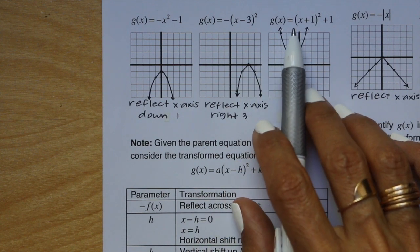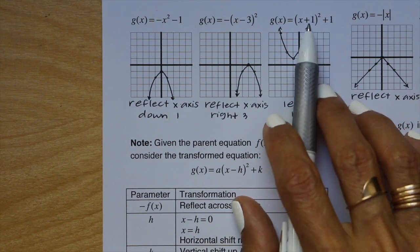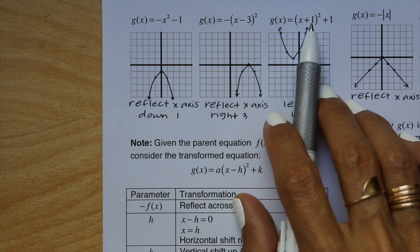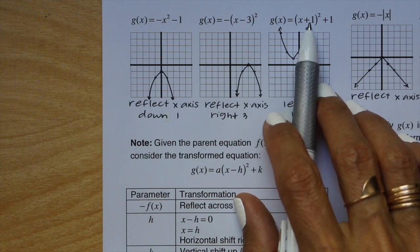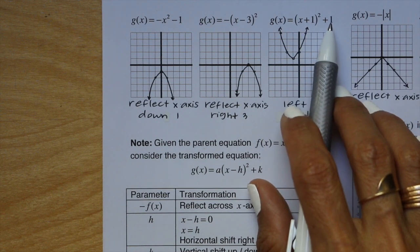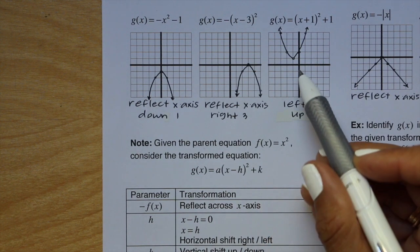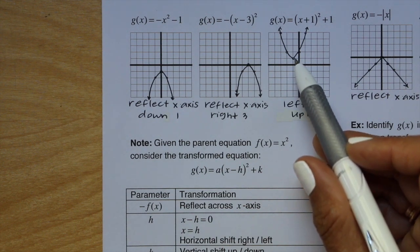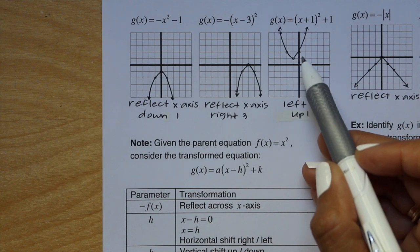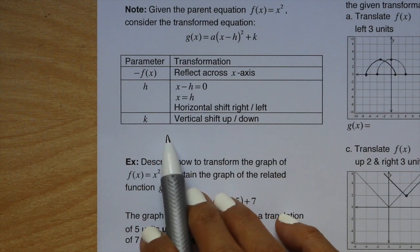This last example in this section says g of x equals (x plus 1) squared plus 1. We have two transformations. The number inside the parentheses with the x creates a horizontal movement but opposite — it says plus 1, so we move left 1. The number at the end is a vertical movement, so we move up 1. Plot the vertex at left 1 up 1, then from there use the same pattern: right 1 up 1, then right 2 up 4.